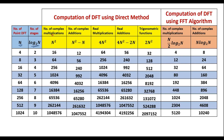The number of complex multiplications in the case of the direct method required is N squared. Number of complex additions required is N squared minus N. Real multiplications required is 4N squared. Real additions required is 4N squared minus 2N. Trigonometric functions required is 2N squared.